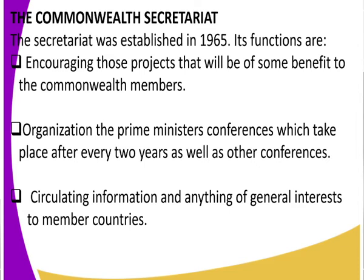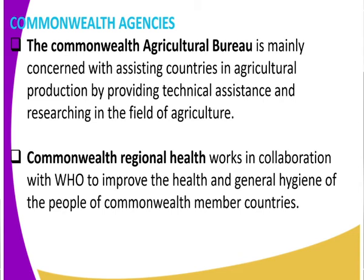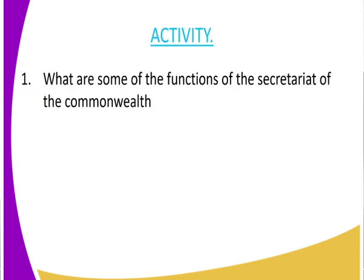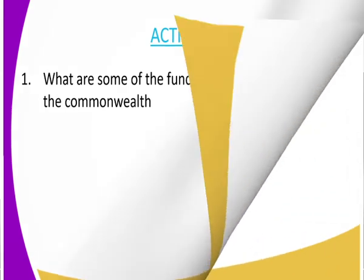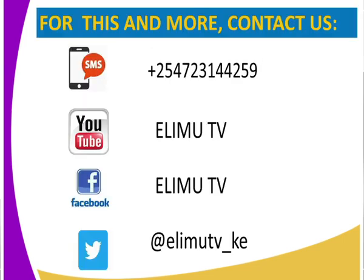Let us also look at the Commonwealth agencies. For example, the Commonwealth Agricultural Bureau mainly concerns itself with assisting countries in agricultural production by providing technical assistance and conducting research in the field of agriculture. The final agency is the Commonwealth Regional Health, which works hand in hand with the World Health Organization to improve the health and general hygiene of the people of Commonwealth member countries, ensuring that health is achieved by all member states. For our activity class, state some of the functions of the Secretariat of the Commonwealth. Refer to Evolving World History and Government. This is Elimu TV, your favorite learning station where you get to watch and learn.